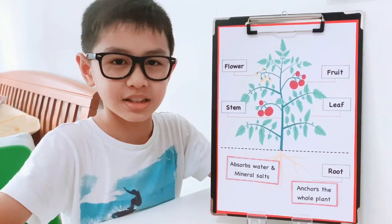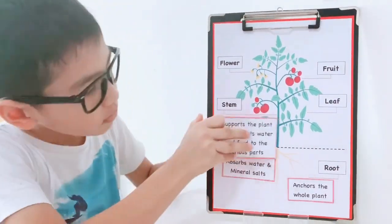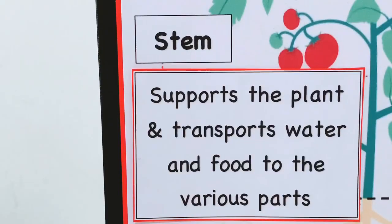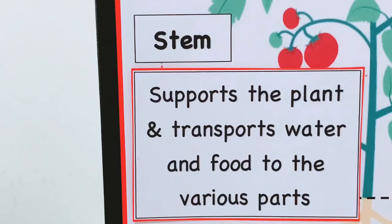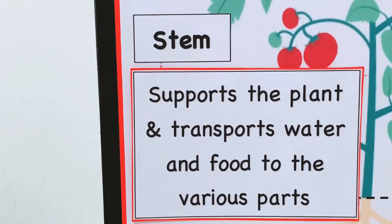Next, let us look at the function of the stem. The stem supports the plant and transports water and food to the various parts of the plant.